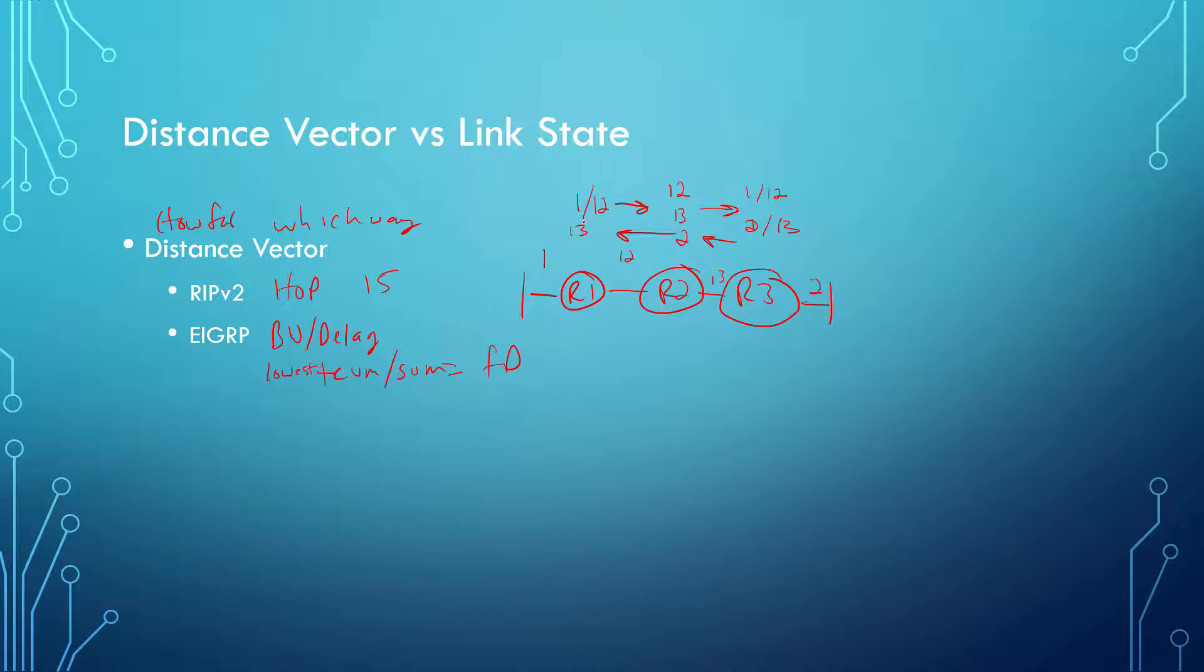This guy will learn about 2, this guy will learn about 2, so at the end of the day we'll know how to reach all of our destinations. However, R1 only knows about the 1 network, the 12 network, the 13 network, and the 2 network because R2 told it. If R2 didn't know, R1 wouldn't know.